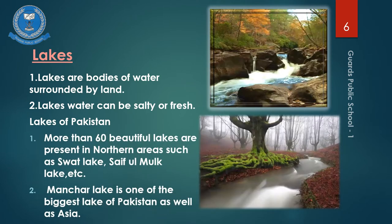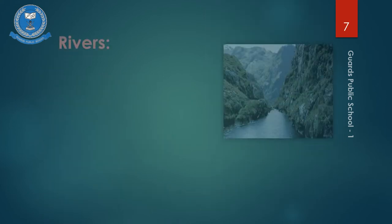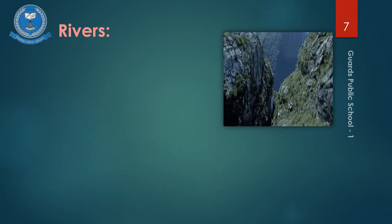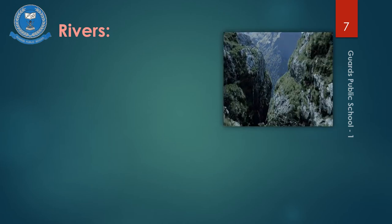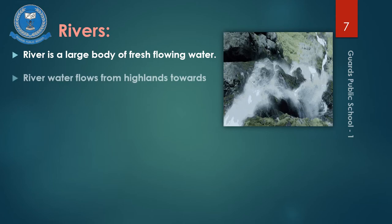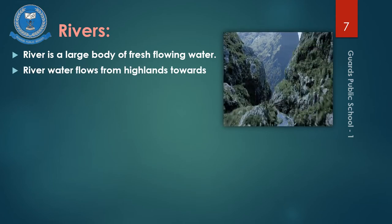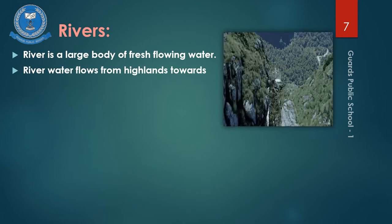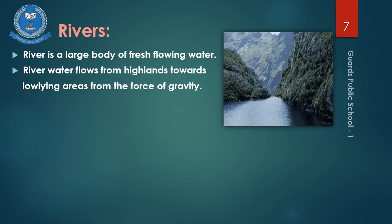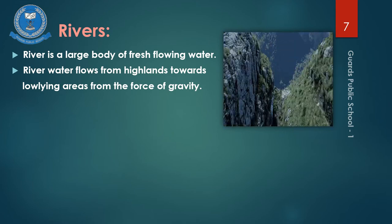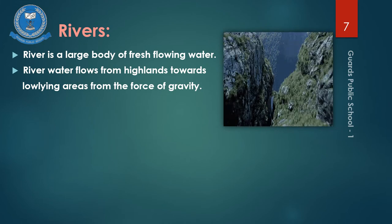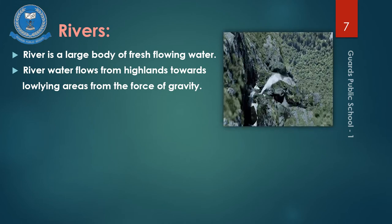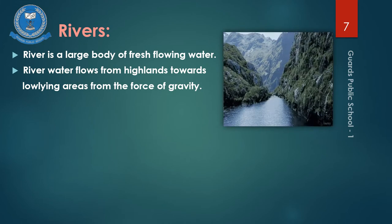Rivers are very important physical features of the earth. River water comes from mountains and flows continuously, and also carries minerals from the mountains with it. Rivers can be small or very large — some big rivers are like oceans and ships sail on them, just like Turkey's Bosphorus River, which is also very deep.